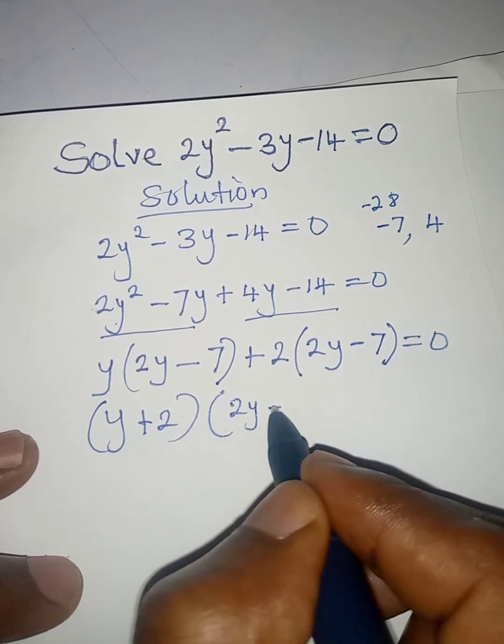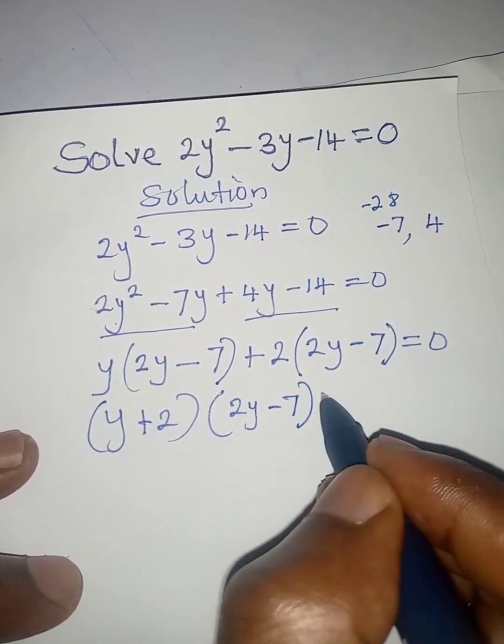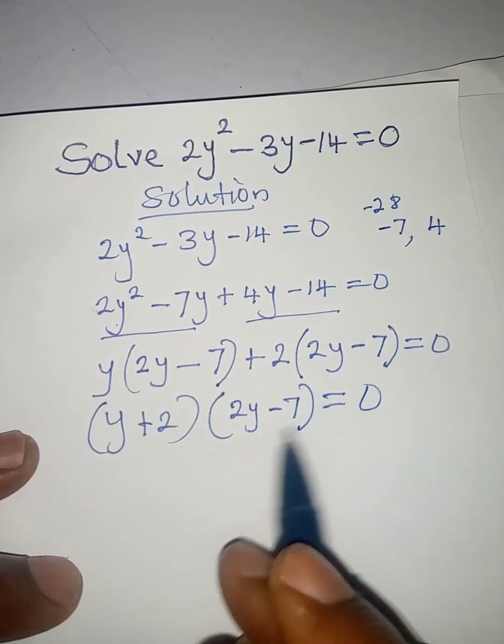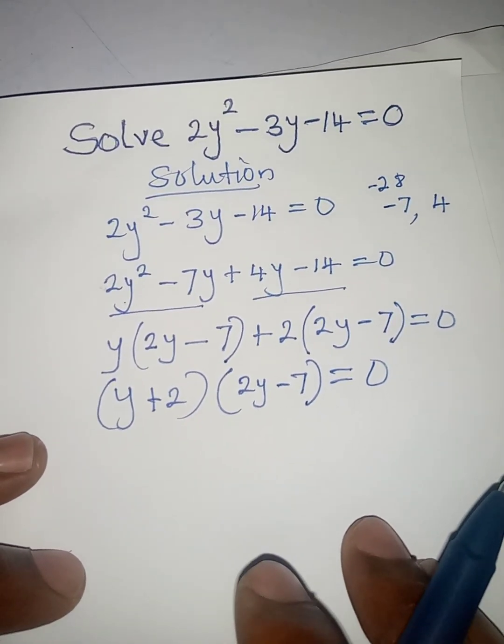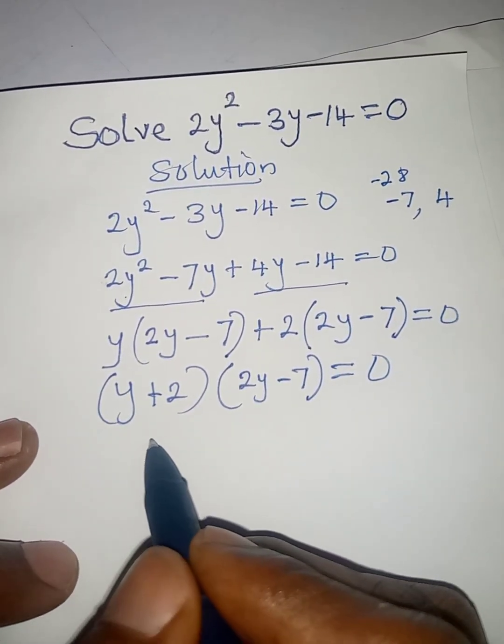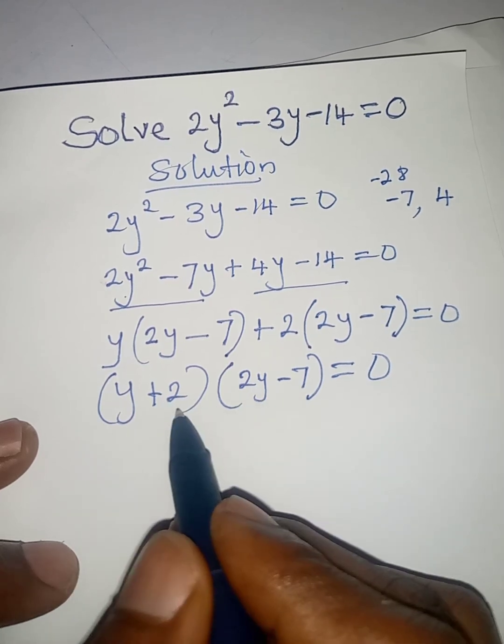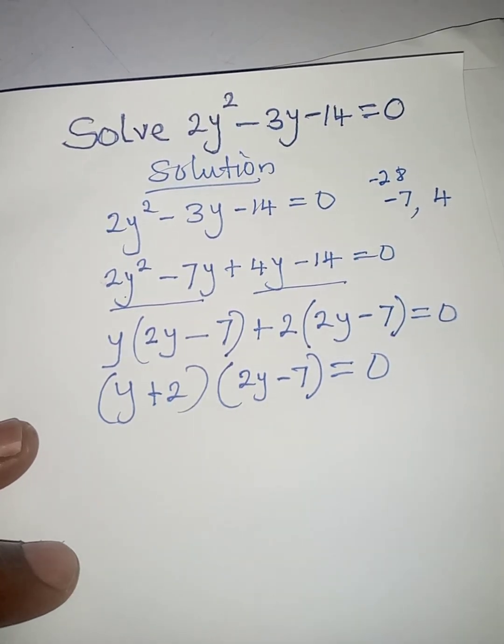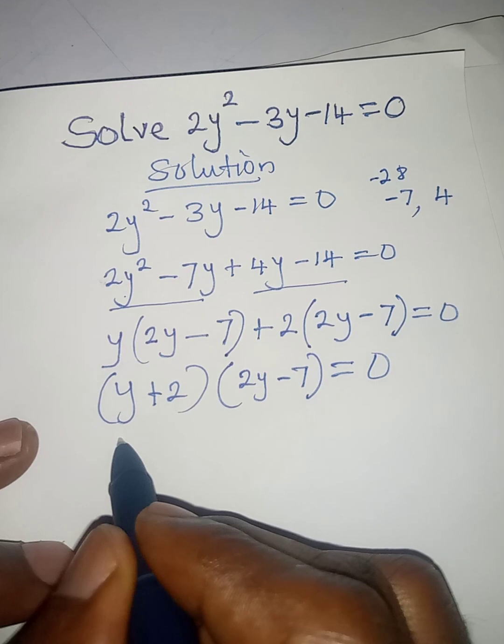According to the law of quadratic equations, it means that either of these fractions or both of them are equal to zero. So we are going to have